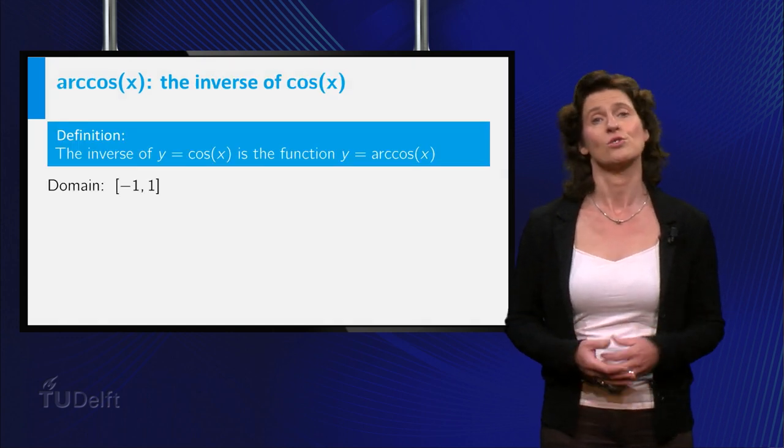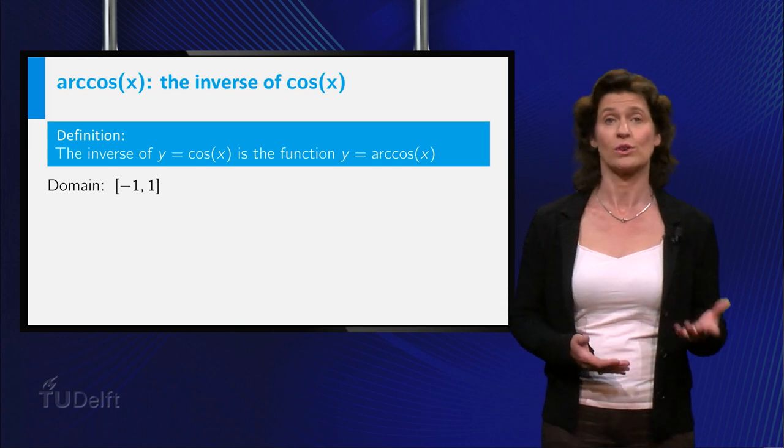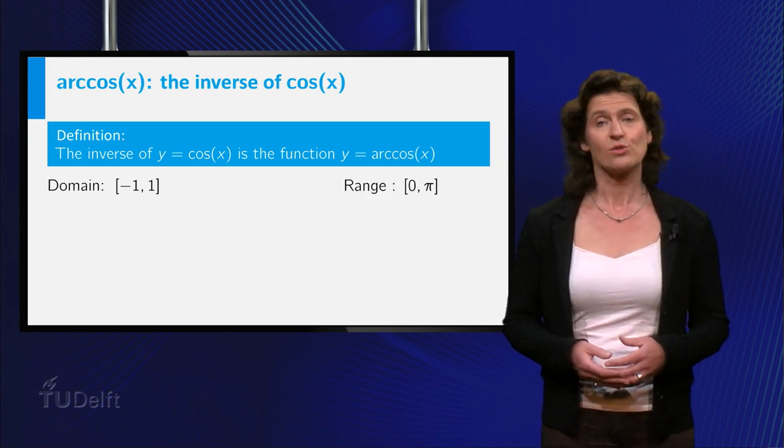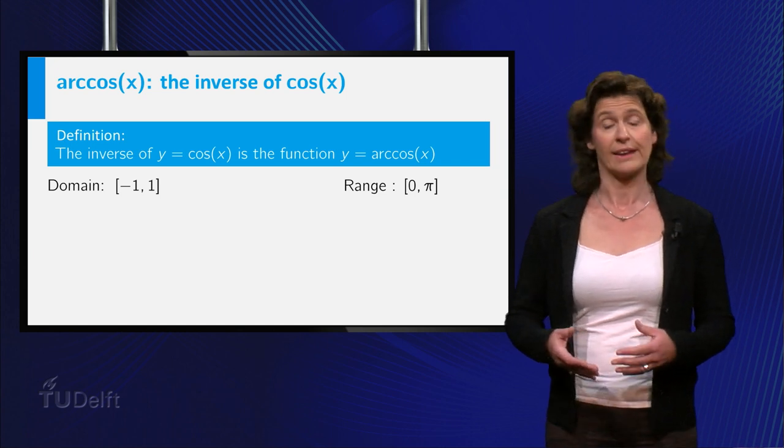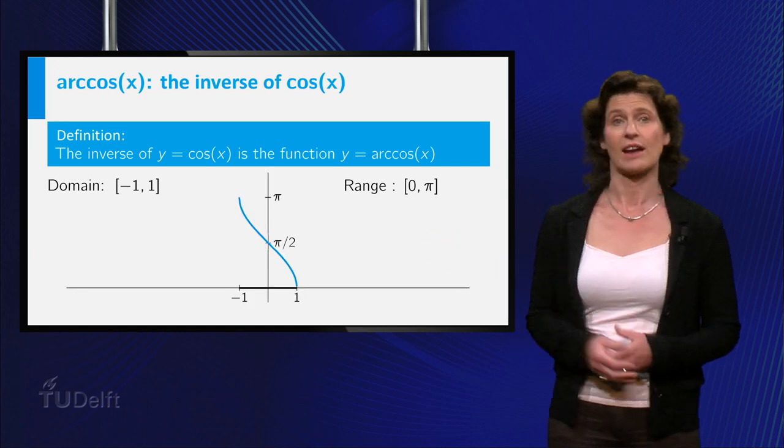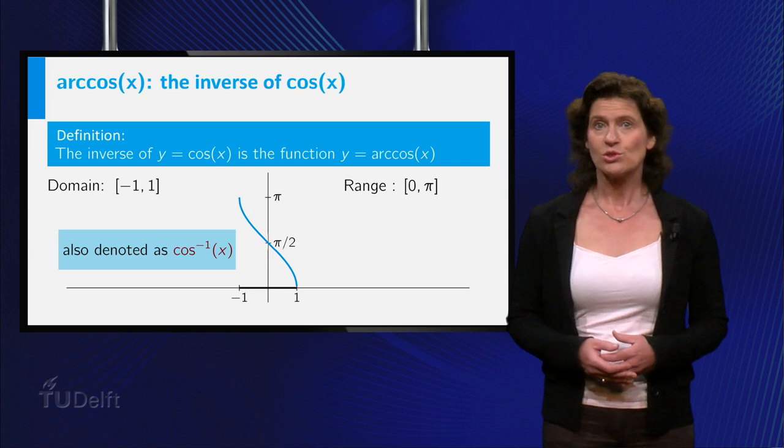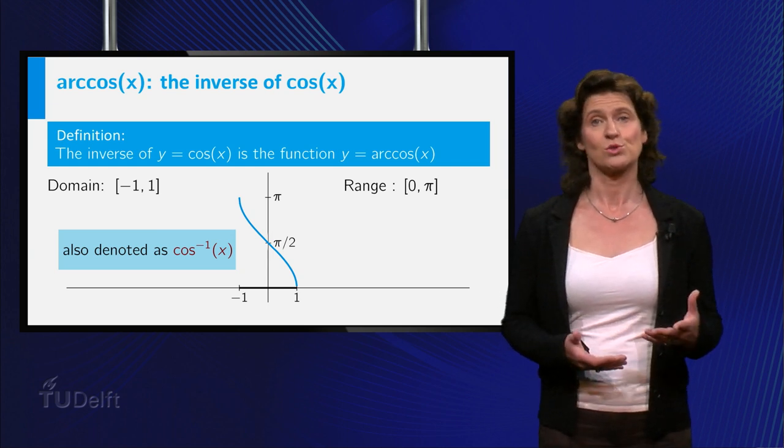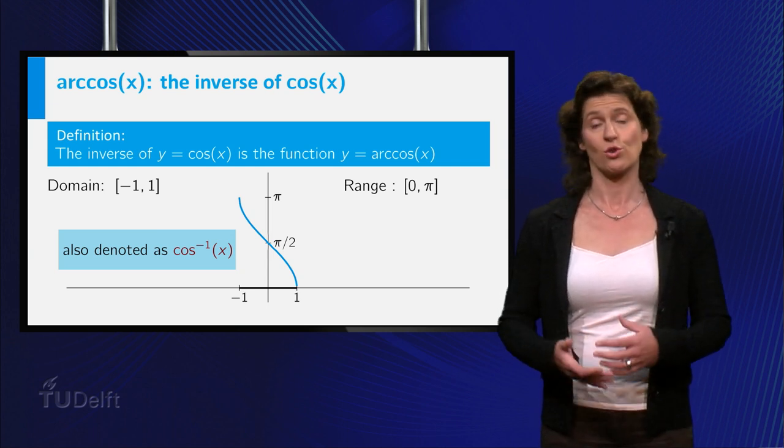The domain of the arcsine is the interval from minus 1 to 1. And the range of the function is the interval from 0 to pi. Here is its graph. Some books use the notation cosine superscript minus 1 for the inverse of the cosine function.